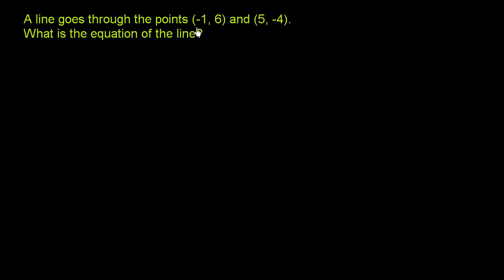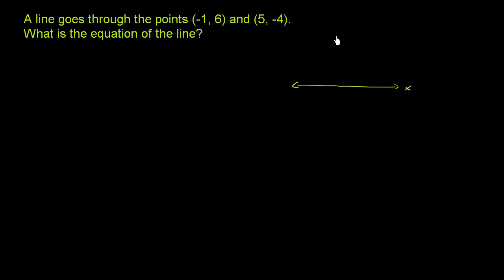A line goes through the points negative 1 comma 6 and 5 comma negative 4. What is the equation of the line? So let's just try to visualize this. That is my x-axis, and you don't have to draw it to do this problem, but it always helps to visualize. That is my y-axis.